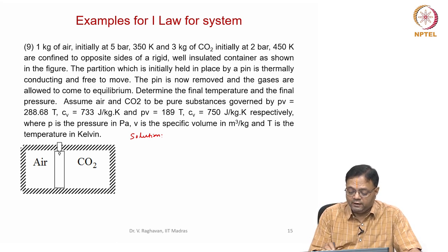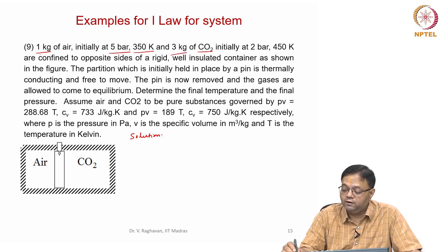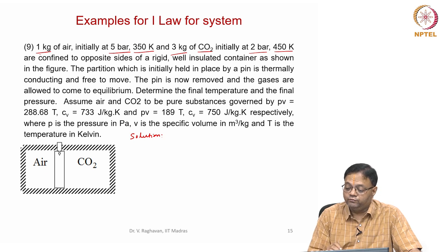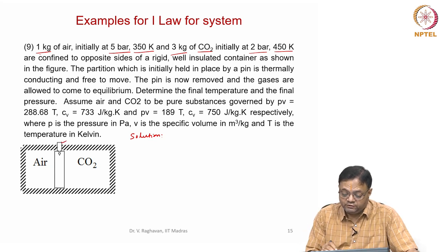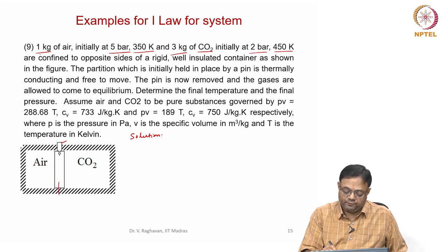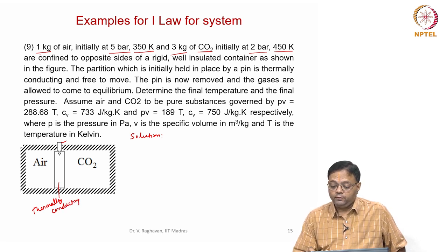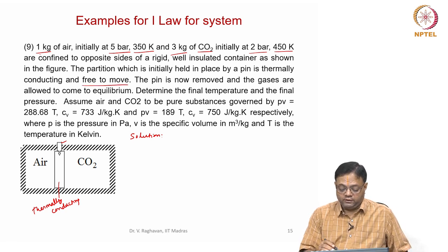Problem 9: again there is a two-compartment container. One compartment has 1 kg of air at 5 bar and 350 K; the second has 3 kg of carbon dioxide at 2 bar and 450 K. They are on opposite sides of a rigid, well-insulated container. There is a partition initially held by a pin, and the partition is thermally conducting.